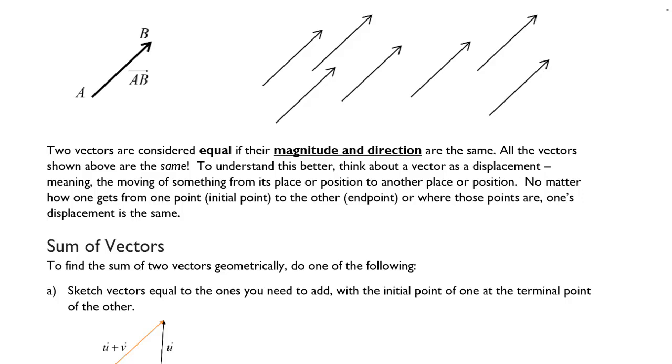If we look at all these different vectors, you can see that they all look like they're going the same direction as the vector AB. Two vectors are considered equal if their magnitude and direction are the same. All the vectors shown above are the same.